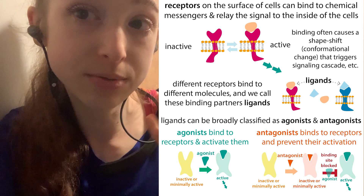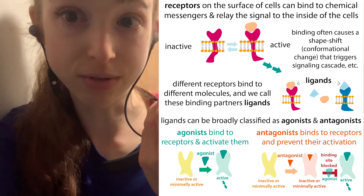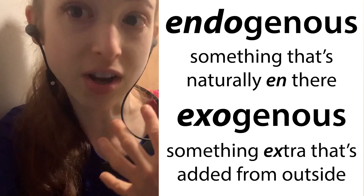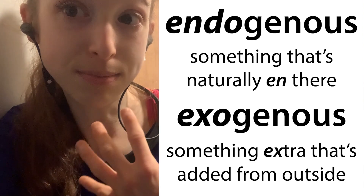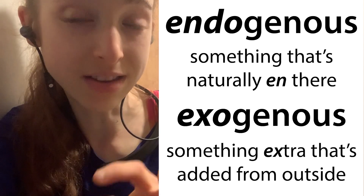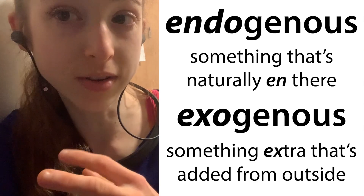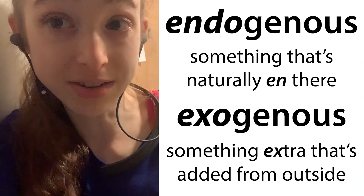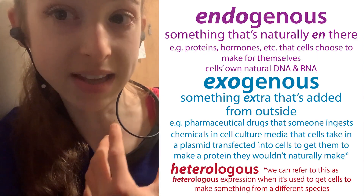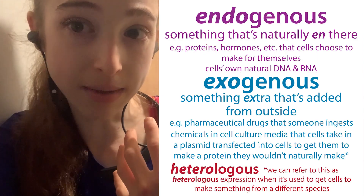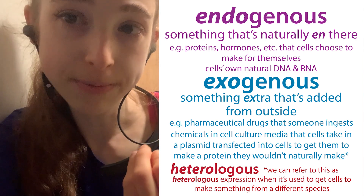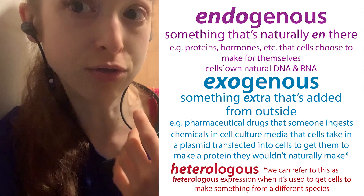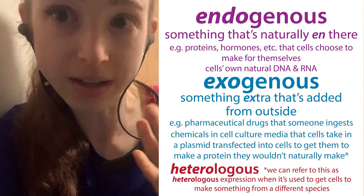Receptors have their natural ligands, the things they normally bind to. These are endogenous things — things that your cells make for themselves. So we can talk about endogenous and exogenous: endogenous is something already in there, something your body is making for itself, like hormones and other signaling molecules. Exogenous is something external that's added, such as a drug you ingest or food that you eat.